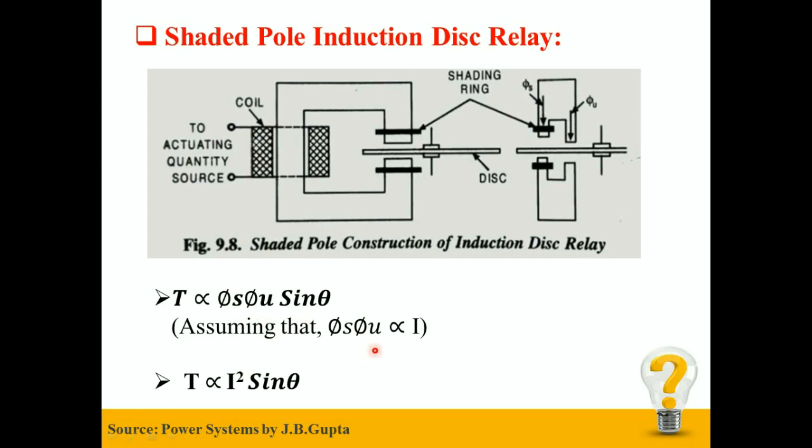Assuming that φs·φμ ∝ I, the equation can be given as deflecting torque T ∝ I²·sinθ. So driving torque varies as the square of the current flowing in the relay coil.